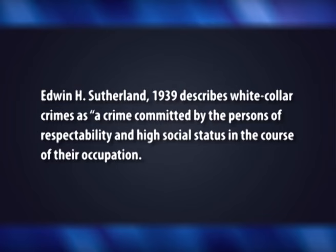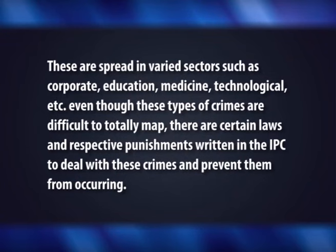Dear students, let us conclude this lecture. Edwin H. Sutherland in the year 1939 describes white collar crimes as a crime committed by the persons of respectability and high social status in the course of their occupation. These types of crimes have far-reaching effects on the development of society and the country as a whole. These are spread in varied sectors such as corporate, education, medicine, technology, etc. Even though these types of crimes are difficult to totally map, there are certain laws and respective punishments written in the IPC to deal with and prevent these crimes.